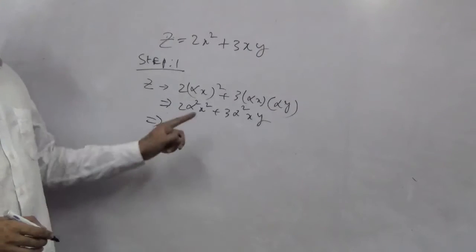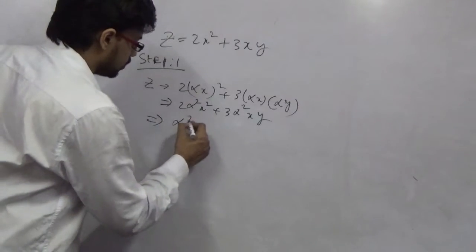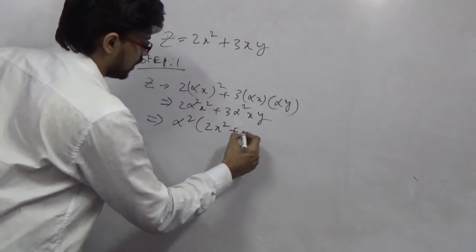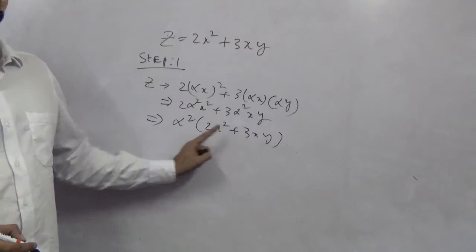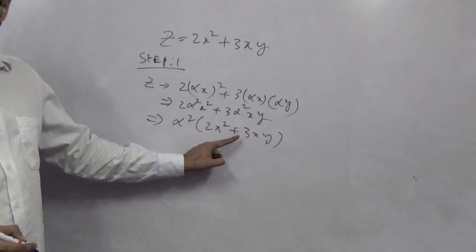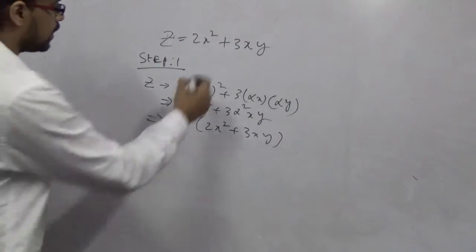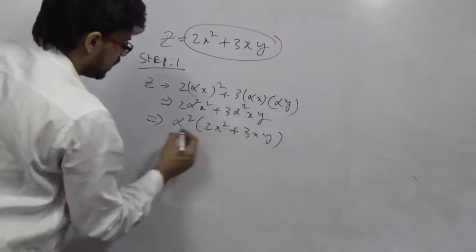Now, from this pattern, now you are going to take alpha square common. So this is going to be 2x squared plus 3xy. See, you are back into the old equation. You are back to the old equation. This is the equation given, and now you are there.